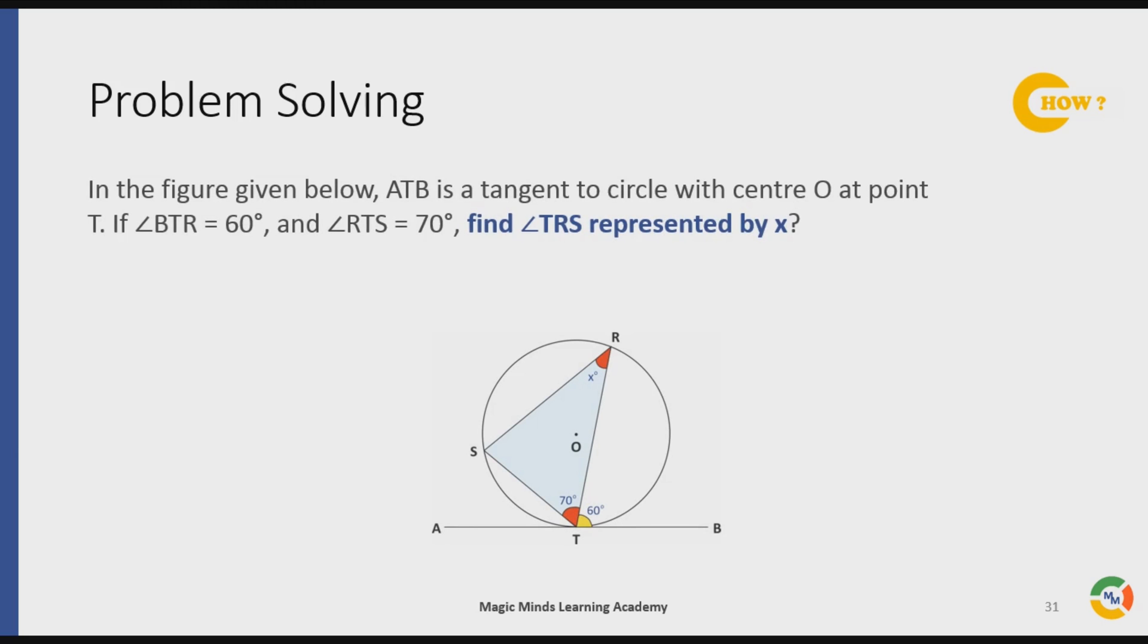In the figure given below, ATB is a tangent to circle with center O at point T. If angle BTR is equal to 60 degrees and angle RTS is equal to 70 degrees, find angle TRS represented by x.